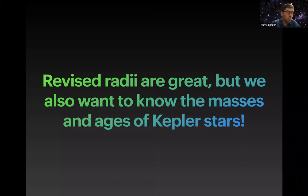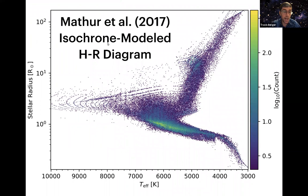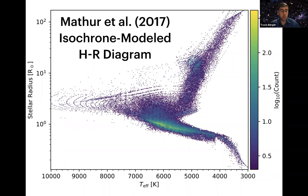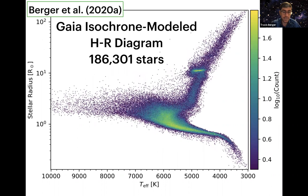These revised radii are great, but we also want to know additional information about Kepler stars, such as masses and ages. Here is how things looked back in 2017 with isochrone-modeled stellar radii and effective temperatures — there's clearly latching onto a grid of models for hot stars, the red clump is not well defined, there aren't many subgiant stars, and there's a gap in the distribution of effective temperatures. When we implement Gaia DR2 parallaxes and a uniform effective temperature scale, things sharpen up very nicely — no more latching onto grid models, the red clump is well defined, there are more subgiant stars, and the temperature gap disappears.